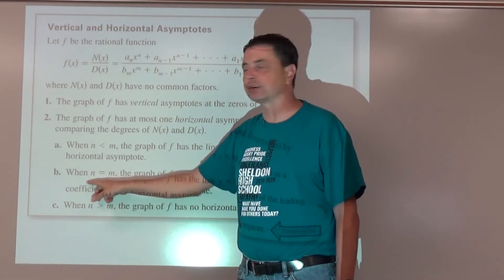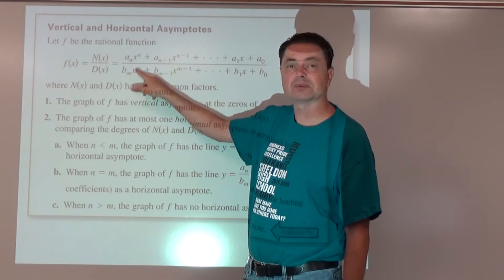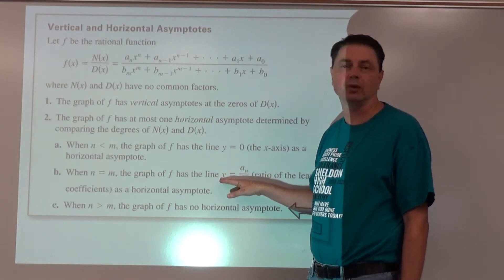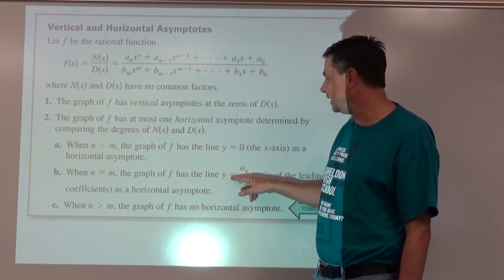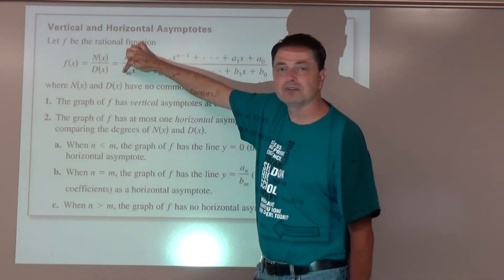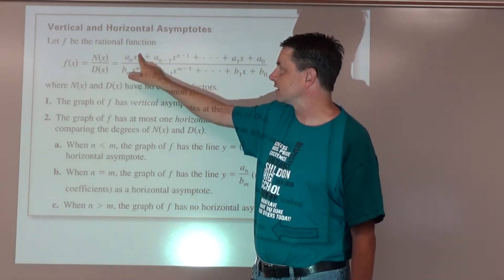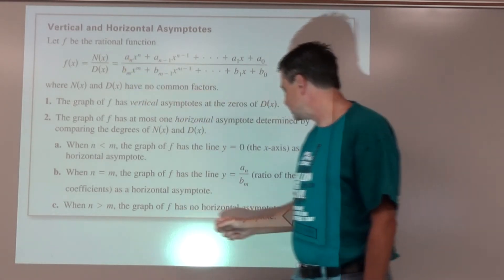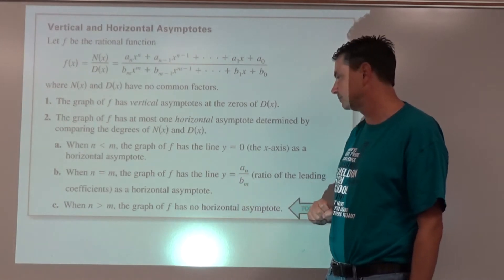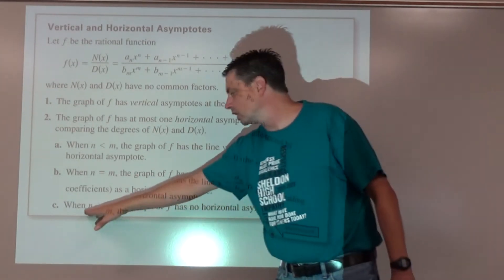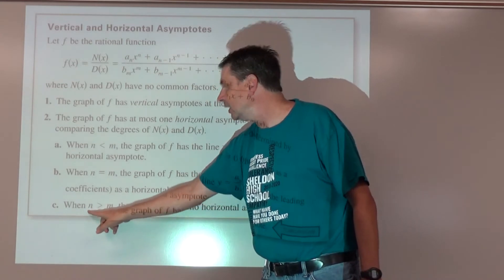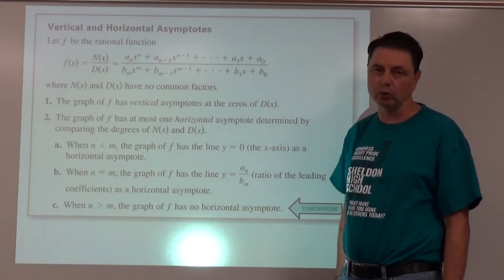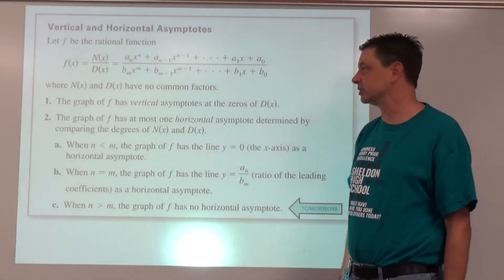If those two degrees are the same — say both are x to the fifth — then it will have a horizontal asymptote, but not at y equals zero. It will be at y equals leading coefficient divided by leading coefficient. For example, if this was 3x to the fifth over 1x to the fifth, the horizontal asymptote is y equals 3. When the degree of the numerator is larger than the denominator, there is no horizontal asymptote — something else happens instead.